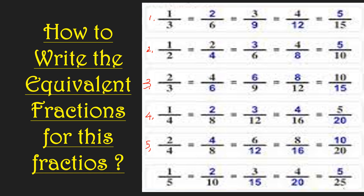Sixth problem: 1/5. Multiply numerator and denominator by 2 to get 2/10. Multiply by 3 to get 3/15. Multiply by 4 to get 4/20. Multiply by 5 to get 5/25. All six sums are now finished.